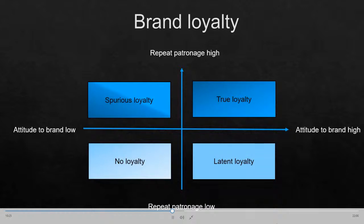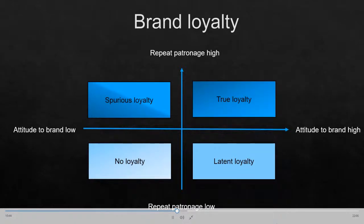Just like we segmented individuals based on age or other variables, we can segment them based on the propensity to be loyal to a brand. Based on attitudinal and behavioral variables, we can categorize potential consumers into four different groups: those showing no loyalty to a brand, those showing latent loyalty, spurious loyalty, or true loyalty.